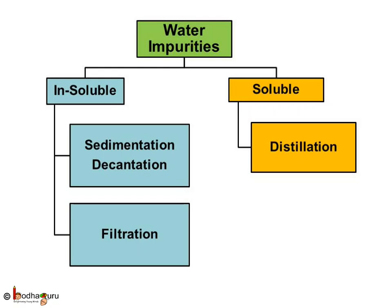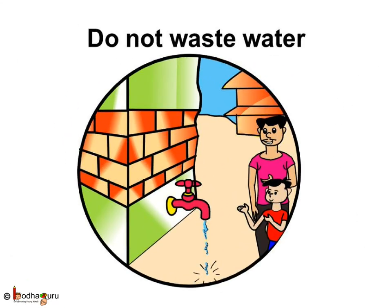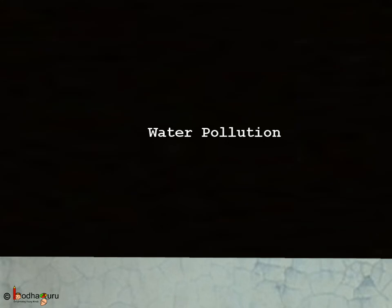As we saw, for removing insoluble impurities we can use sedimentation, decantation and filtration methods. For removing soluble impurities we can use the distillation process. What are the ways of purifying or cleaning water at our homes? The simplest method is by boiling. Water purification is also done by adding chemicals like chlorine to kill the germs. Nowadays, various small filtration machines are also used at home to purify the water for drinking. Water is very precious for all living things. We should not waste water.